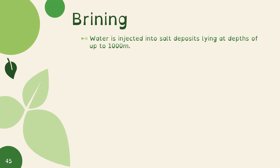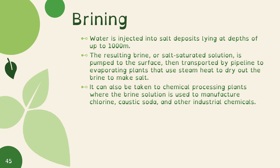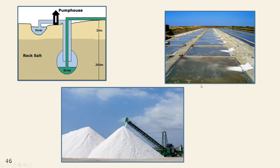Brining involves injecting water into salt deposits at depths of up to 1,000 meters. The resulting brine — a salt-saturated solution — is pumped to the surface and transported by pipeline to evaporating plants, where steam heat dries it out to make salt. It can also be taken to chemical processing plants where the brine is used to manufacture chlorine, caustic soda, and other industrial chemicals. Only about one quarter of Canada's salt is brined, and most of that is used in chemical manufacturing.